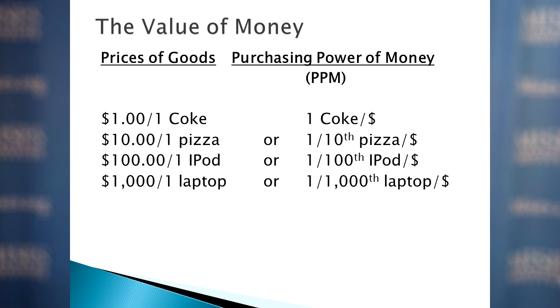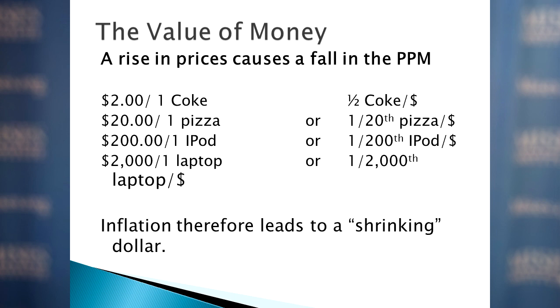If a Coke is a dollar, that means a dollar can purchase a Coke. The purchasing power of a dollar in terms of pizzas — if pizzas are $10 — is one-tenth of a pizza. If prices go up, the value of money goes down. When the prices of all these things double, from $1 to $2 per Coke or $10 to $20 per pizza, the value of money is now less — a dollar can buy half a can of Coke instead of a full can. So inflation leads to a shrinking of the dollar; each dollar's purchasing power is now less.